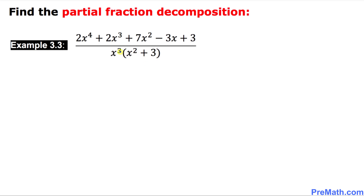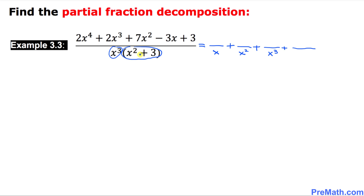In our next example, we focus on the denominator. We have one linear factor x³, meaning it repeats itself three times, and the next one is a quadratic factor. All together we are going to have four fractions. For the linear factor x³, the denominators go x¹, then x², then x³. And the fourth denominator is the quadratic factor x² + 3.